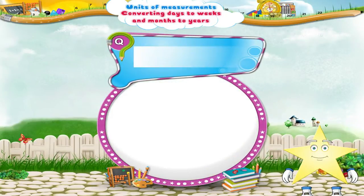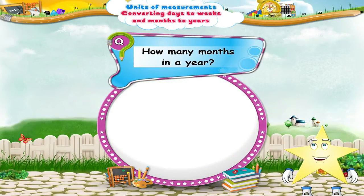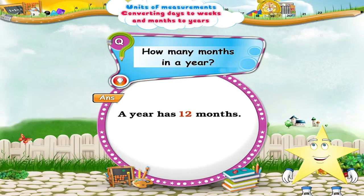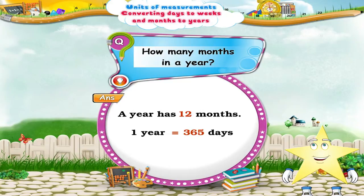Stari, how many months in a year? Yes, a year has 12 months. And don't forget, Stari, a year has about 365 days.